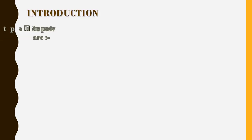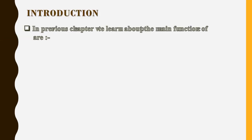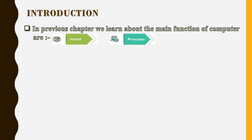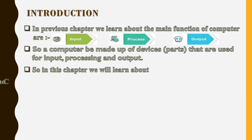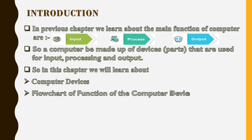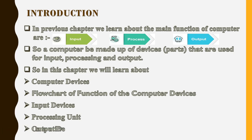Introduction: In the previous chapter, we learned that the main functions of a computer are input, process, and output. So a computer is made up of devices and parts that are used for input, processing, and output. In this chapter, we will learn about computer devices, the flowchart of functions of computer devices, input devices, processing unit, and output devices.